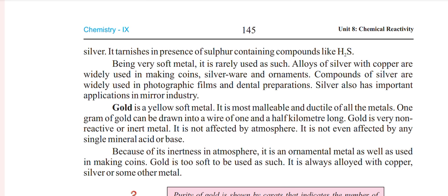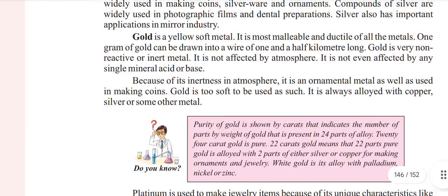Gold is not affected by the atmosphere. It is not even affected by any single mineral acid or base. Because of its inertness in the atmosphere, it is used as an ornamental metal as well as in making coins. Gold is too soft to be used as such; it is always alloyed with copper, silver, and some other metals.